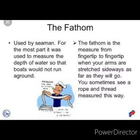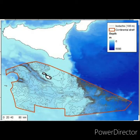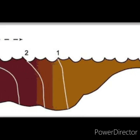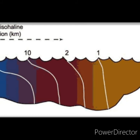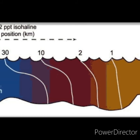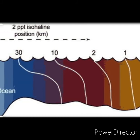A nautical measurement of the depth of water in the ocean is known as fathoms. An imaginary line on a map joining points of equal depths is known as the isobath. An imaginary line on a map joining points of equal salinity in the ocean is known as the isohaline.